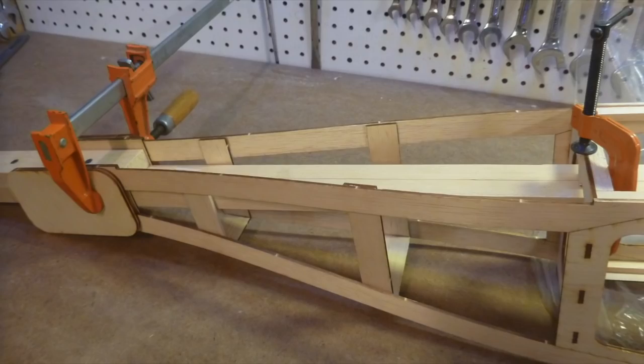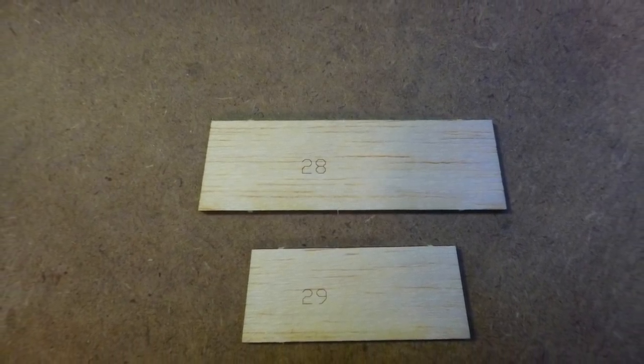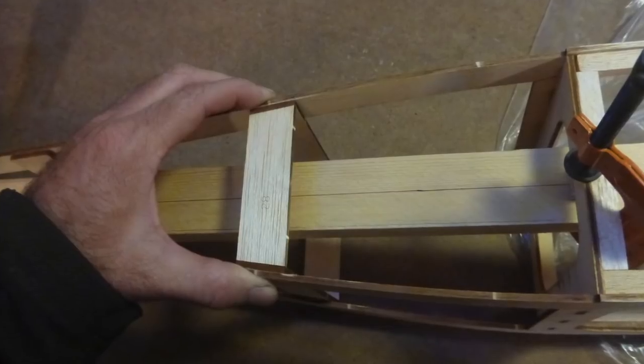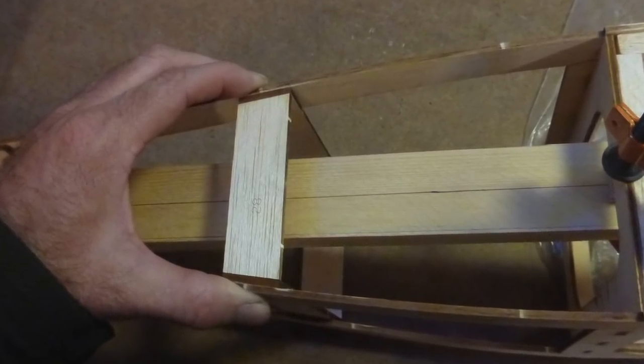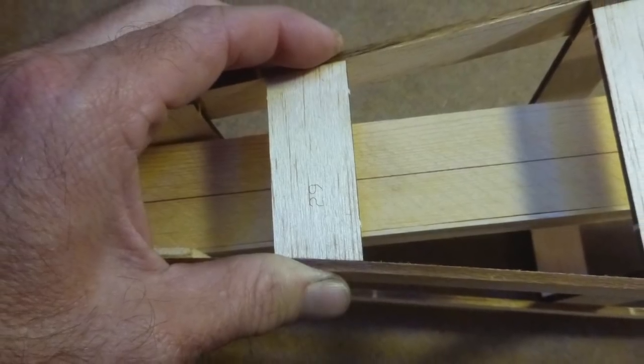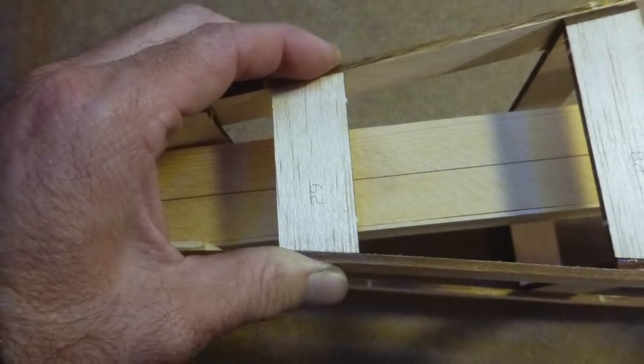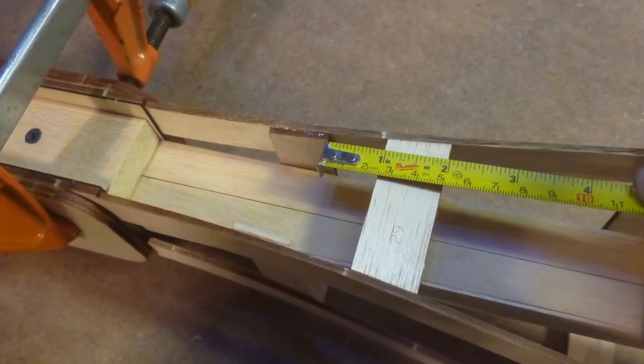Now turn the fuselage right side up, and locate parts number 28 and 29. Part number 28 is glued in place exactly as on the bottom of the fuselage, while part number 29 is glued in approximately one inch forward of parts number 23.